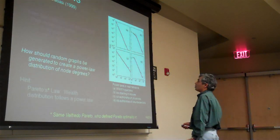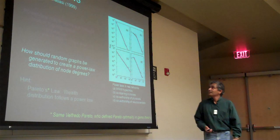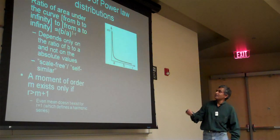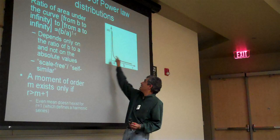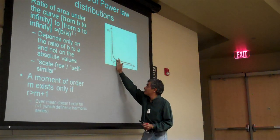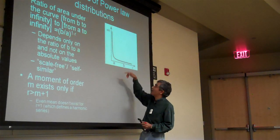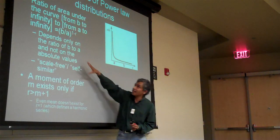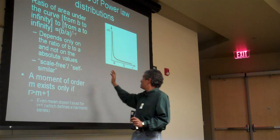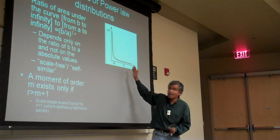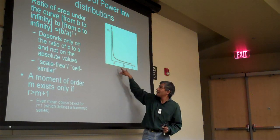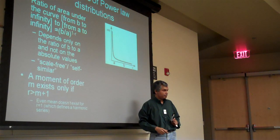These are interesting facts about power laws. The reason it's called scale-free is that if you look at the distribution from any point onward, it again looks like the same distribution. Also, the area doesn't depend on where you are — it only depends on the ratio between A and B.